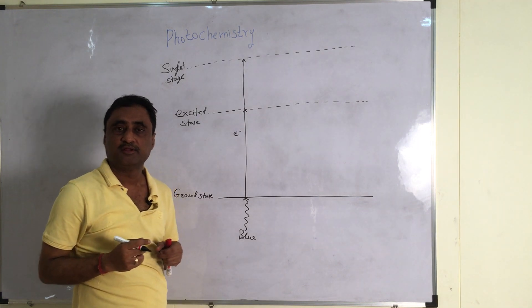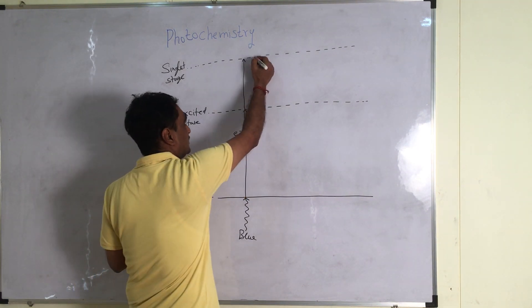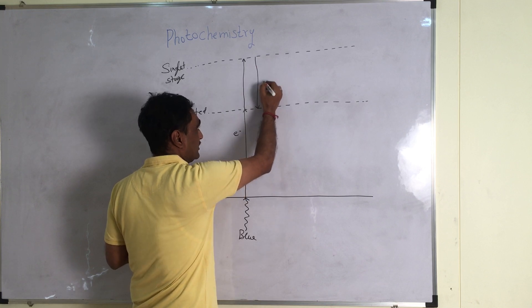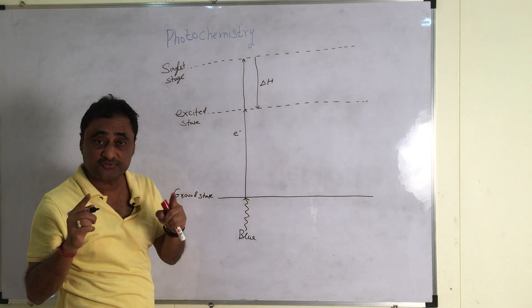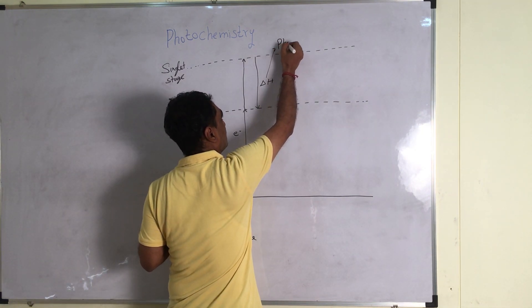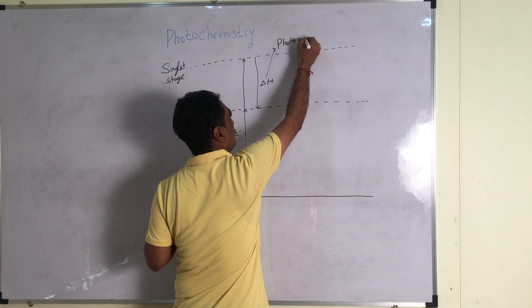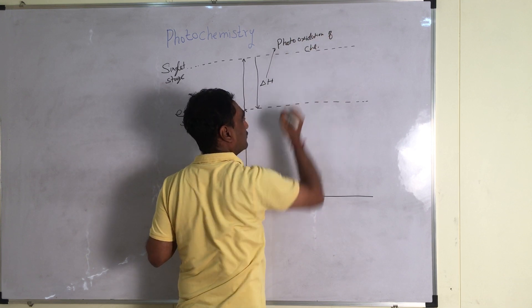Now what will happen? We know very well that electrons will come down to its ground state. So when it comes down, then large amount of heat is actually being released. Now this heat has the capacity to cause photo oxidation of chlorophyll.